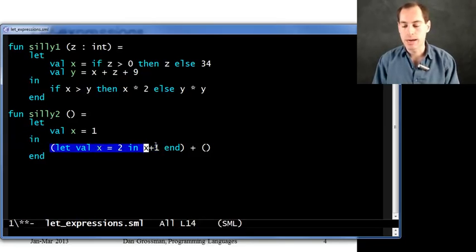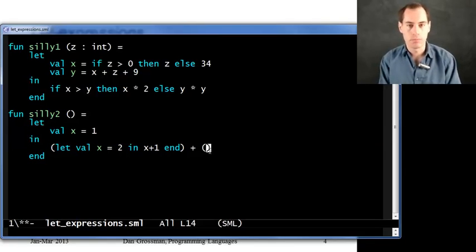So x plus one will be three. And this entire let expression will evaluate to three. The outer x will simply be irrelevant, because I shadowed it.